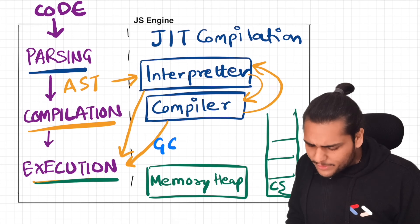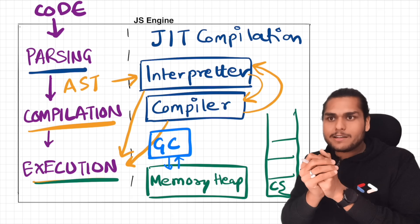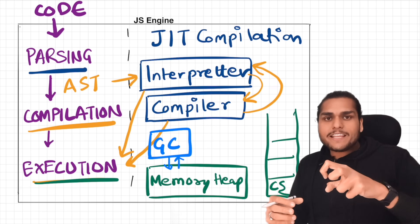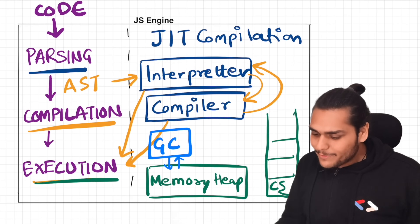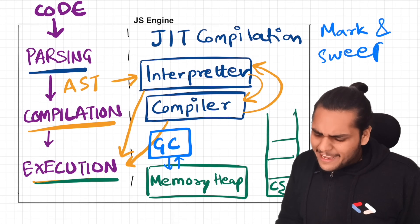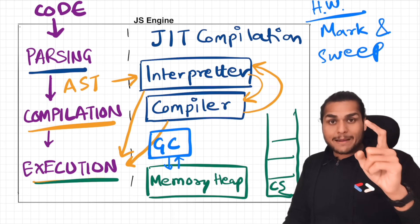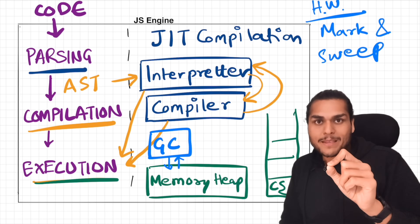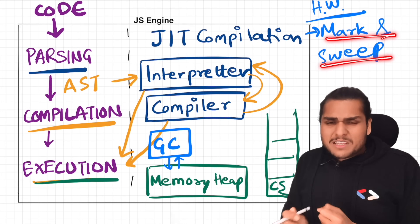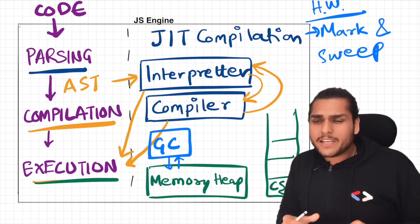We also have a garbage collector. It basically tries to free up memory space whenever possible — whenever some function is not being used or we clear a timeout, it collects all the garbage and sweeps it. It uses an algorithm known as the mark and sweep algorithm. Go and read about it — it is widely used across garbage collectors not just for JavaScript but broadly.